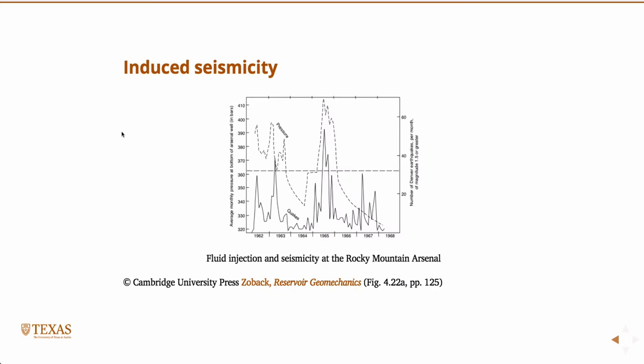And so you can see that the number of earthquakes per month is essentially directly correlated to the injection pressure. So where there were spikes in injection pressure, there were spikes in earthquakes.